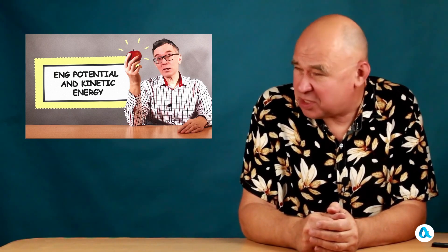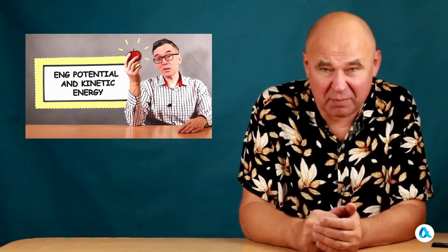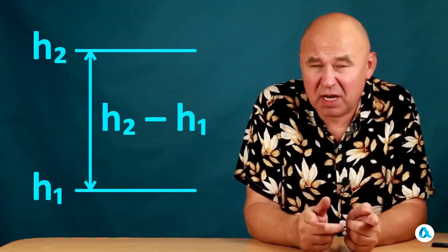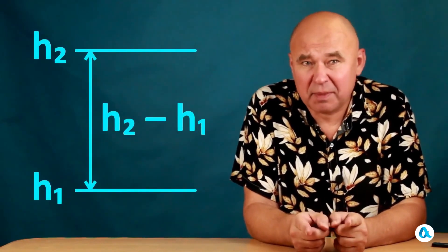And potential energy, as we remember (and we have a special video about this), can be measured from any level. Just like in mechanics, we can take the level of the table as the zero reference level, or we can take it higher. Conversely, we can measure it lower from the floor or from the ground. It doesn't matter. What matters is that, no matter from which initial level we start measuring, the difference between two levels will remain the same. And with potentials in electrostatics, things are exactly the same.